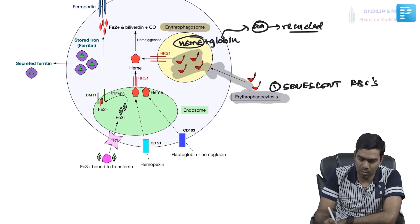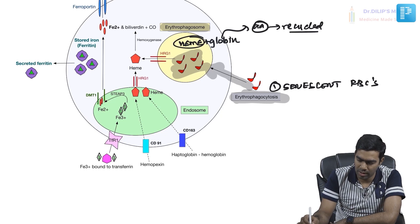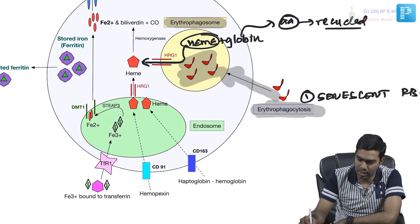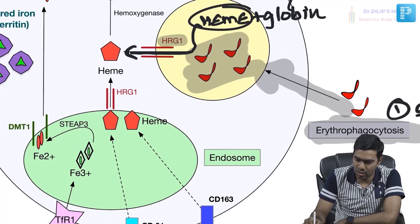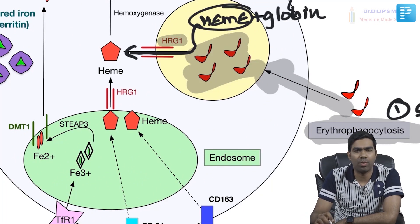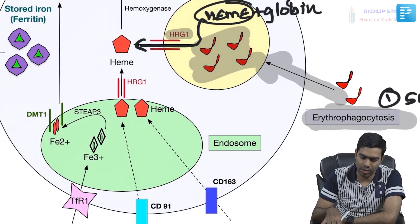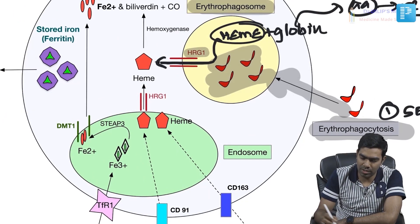What about the heme formed within the erythrophagocytic vesicle? This heme is transported out by a transport protein called HRG1 — heme regulatory gene one — and its protein product. HRG1 transports the heme out of the erythrophagocytic compartment.